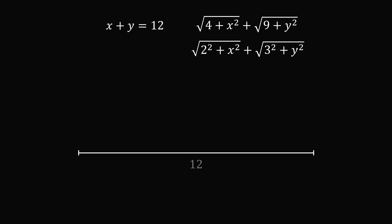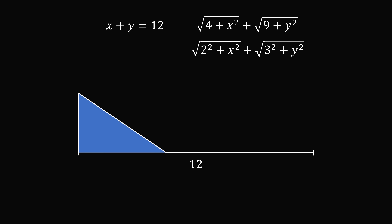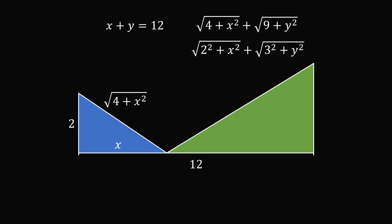We make a base length of 12, then construct one right triangle with base x and height 2, so its hypotenuse equals the square root of 4 plus x squared. We make another right triangle with base y — since x plus y equals 12 — and height 3, so its hypotenuse equals the square root of 9 plus y squared.